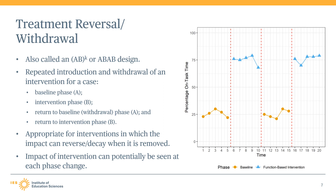Two important details about this design: First, not all treatment reversal designs will begin with a baseline phase. Studies with multiple cases may alternate phase ordering so that half the cases are undergoing the intervention while the other half are in a baseline or return to baseline phase. Second, this design allows for as many phases as the researcher desires. A four-phase treatment reversal design is simply the smallest number of phases which allows for three opportunities to demonstrate an intervention effect. Some treatment reversal designs reported in the literature may use more than these four phases.